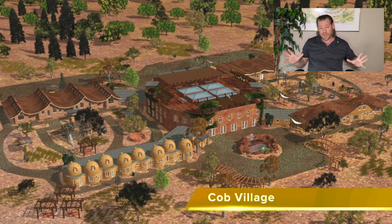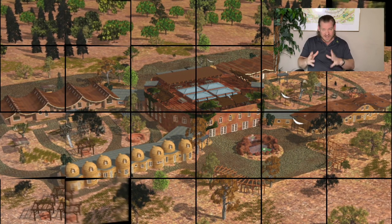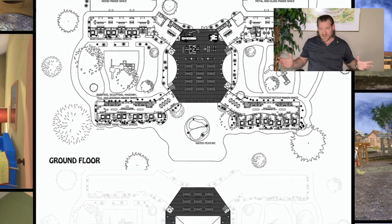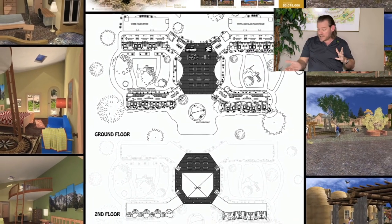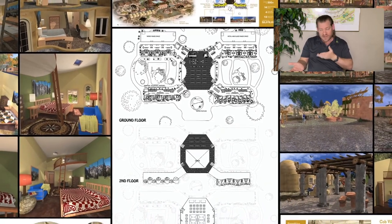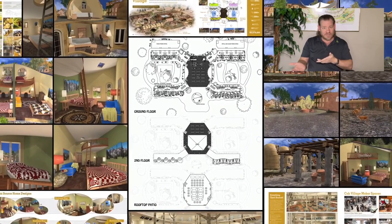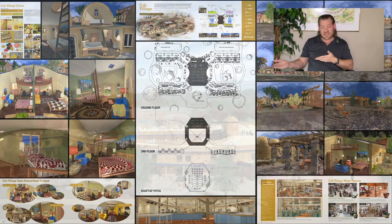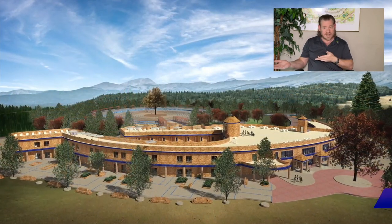We want to provide something for everyone — not just people interested in teacher demonstration hubs or community living, but also people that just want to build themselves a sustainable home built without toxic materials that will last longer and look more beautiful. Or maybe people that just want to grow food that isn't sprayed with the three most common poisons: pesticides, herbicides, and fungicides.